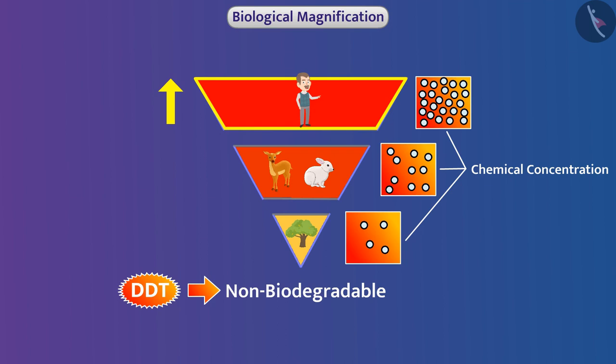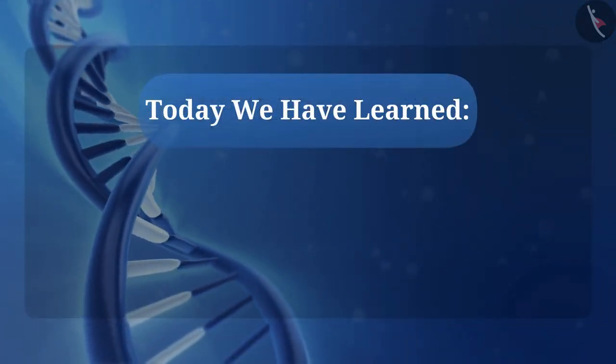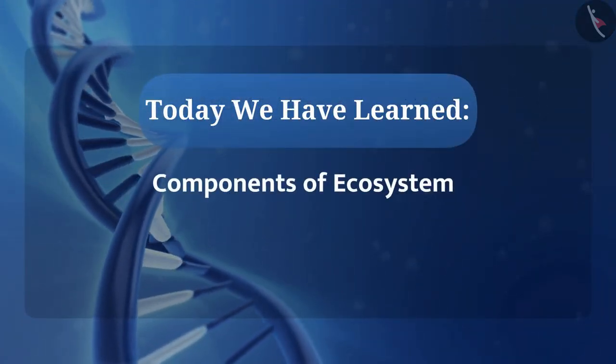This is a matter of concern. You must discuss biomagnification with your teacher and find out how the problem of biomagnification can be prevented and what its solutions are. So today we have learned about components of an ecosystem.